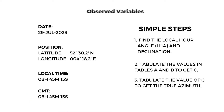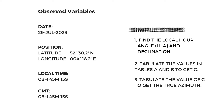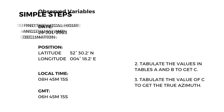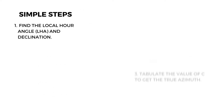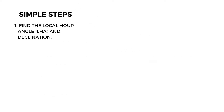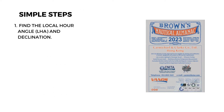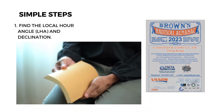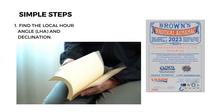Going back to our observed variables, the first step in solving the gyro error is to find the Local Hour Angle (LHA) and the declination. We can do this with our nautical almanac. First, we have to find the Greenwich Hour Angle (GHA)...